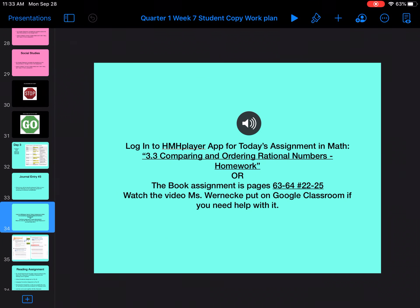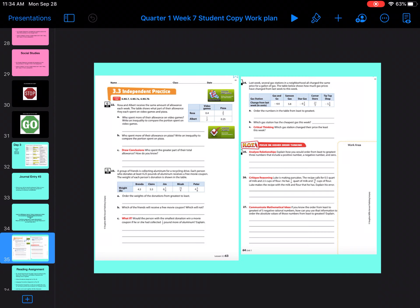For today's homework it's Wednesday. You can either log into the HMH Player app and do the 3.3 comparing and ordering rational numbers homework or the book assignment which is pages 63 through 64 number 22 through 25. So this is the video helping you get through some of that homework.